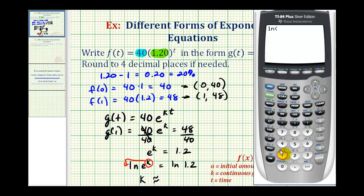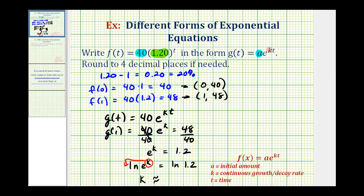So ln(1.2) ≈ 0.1823. Which means the function we're looking for, g(t), is equal to 40e^(0.1823t).